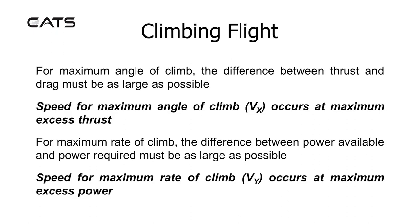For a maximum angle of climb, the difference between thrust and drag must be as large as possible. The speed for maximum angle of climb is known as VX and occurs at maximum excess thrust. For maximum rate of climb, the difference between power available and power required must be as large as possible. The speed for maximum rate of climb is known as VY and occurs at maximum excess power.